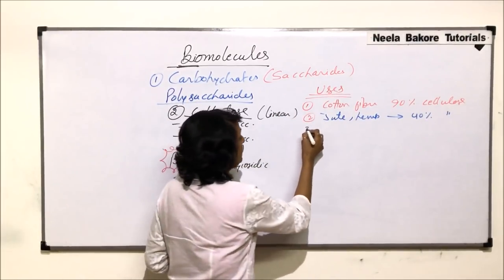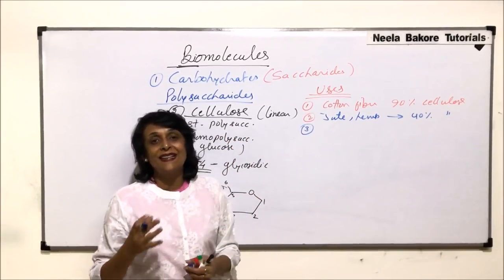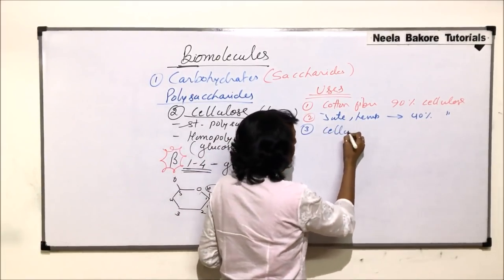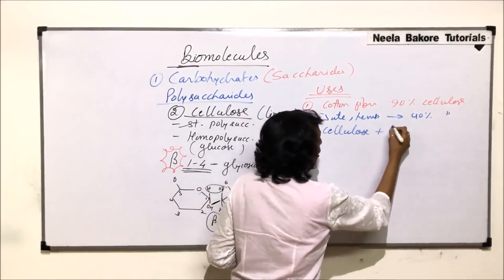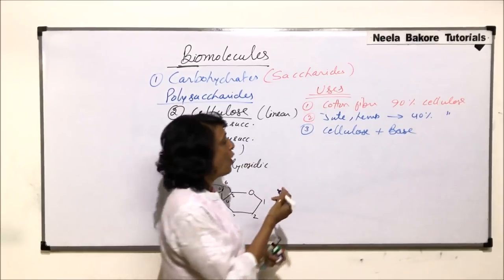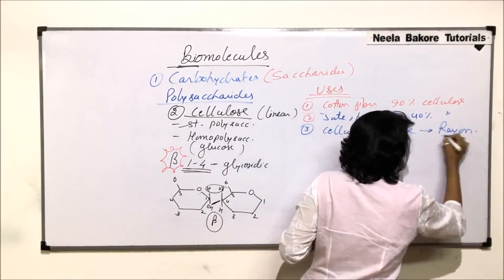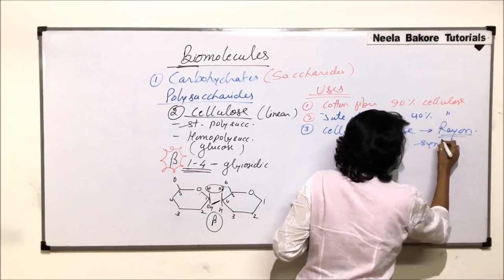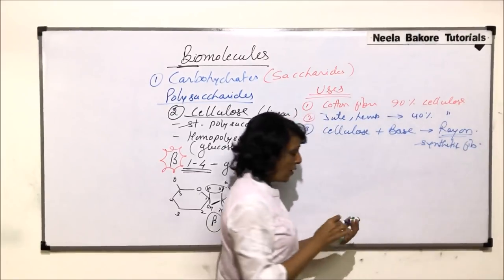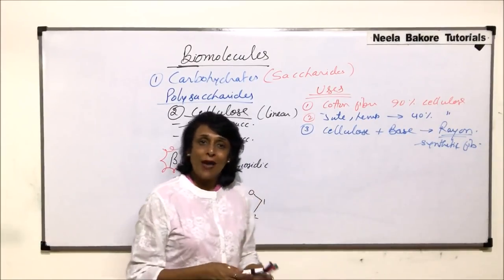Few chemical variations, that means if we dissolve cellulose into something or we make it react with something, that also can be used. For example, cellulose when dissolved in a base or alkali, that slurry which is formed is used to make rayon. And this rayon is known as a synthetic fiber, so this rayon is also obtained by dissolving cellulose into an alkali.